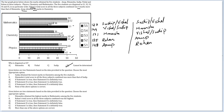The reason why I have included this set: given below are two statements based on the data provided in the question. Choose the most appropriate option. Statement 1: Sudip obtained the lowest marks in chemistry among the five students. The lowest marks in chemistry were obtained by S5, so Statement 1 is implying Sudip is S5. Statement 2: Himanshu's total score in all the three subjects combined was more than that of Sudip.